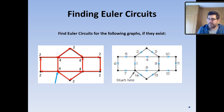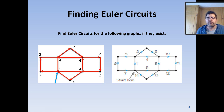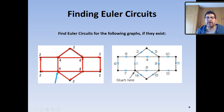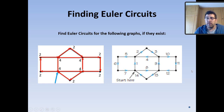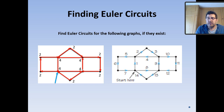Here's another Eulerian circuit on that same graph. We started at the initial vertex, went up to 2, across, down, came across, went up, down, back, across, up, and back to the starting vertex. I'm sure you can find more than two Eulerian circuits in this graph — see if you can find a few more.